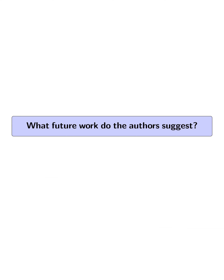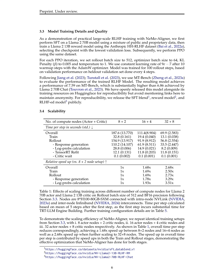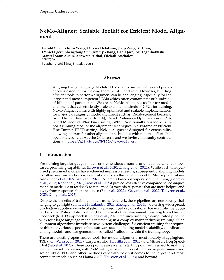What future work do the authors suggest? The authors suggest incorporating additional model alignment techniques such as identity preference optimization, conservative DPO, and Kahneman-Tversky optimization into NEMO Aligner. They also mention integrating other techniques like constitutional AI, rejection sampling, and self-rewarding language models. The authors emphasize the extensibility of NEMO Aligner for easy algorithm and system modification, and highlight potential for further research in large-scale RLHF training, new optimization strategies, and improved efficiency and effectiveness of model alignment processes.